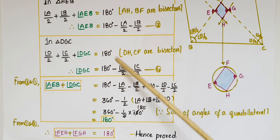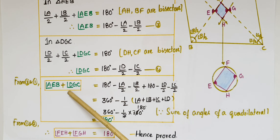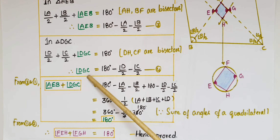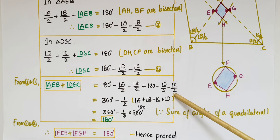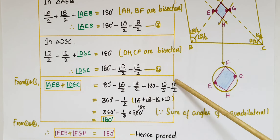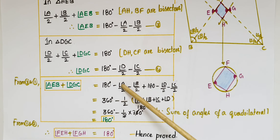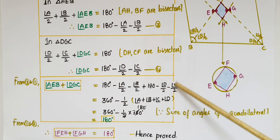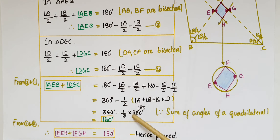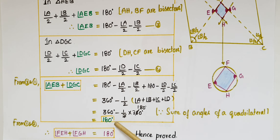Now, adding equations 3 and 4: angle AEB plus angle DGC equals (180 minus A/2 minus B/2) plus (180 minus D/2 minus C/2), which gives 360 minus half of (A plus B plus C plus D). We know that the sum of all angles in a quadrilateral is 360 degrees, so this becomes 360 minus half of 360, which equals 360 minus 180, equals 180 degrees. So angle AEB plus angle DGC equals 180 degrees.